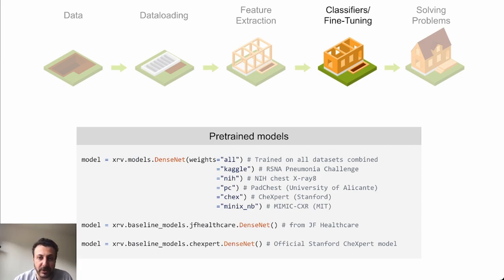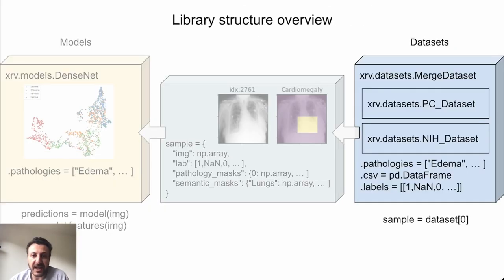The goal of this library is to make everything easy. Let's look at a high-level overview of the library. Here we can see the merged data set has combined the PadChest and NIH data sets. We can see the pathologies available in the dot pathologies field, as well as the metadata about the samples in dot CSV, which is a Pandas data frame.